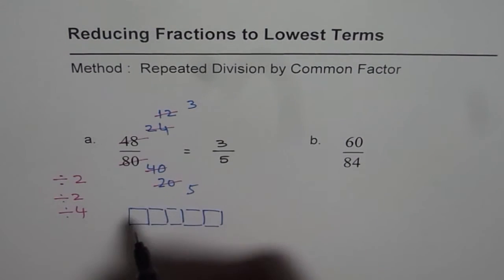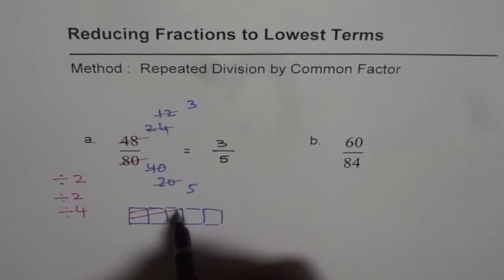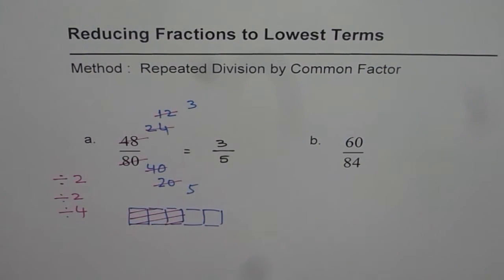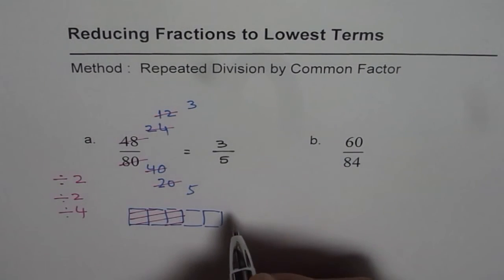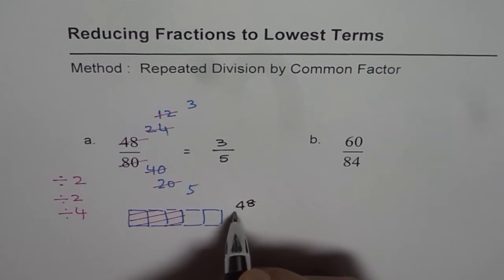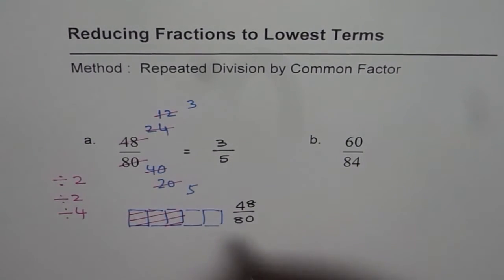Then 48 over 80 means 3 out of 5. So this is what it means. This is 48 over 80 also. So this is also 48 over 80. So that is the fraction part representation.